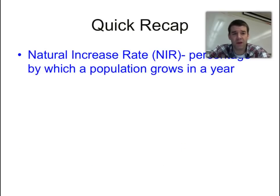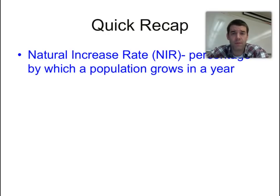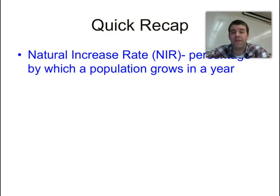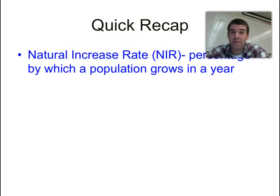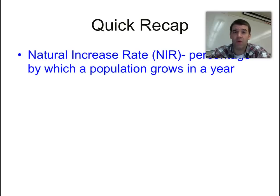As a quick recap from the last video, the natural increase rate is the percentage by which a population is growing per year. Currently the world average is about 1.2 percent. In the fastest growing places in the world you're going to see it over 2 percent. It doesn't sound like a lot, but that means the population is going to double in a relatively short period of time, especially when you look at population growth over the course of human history.